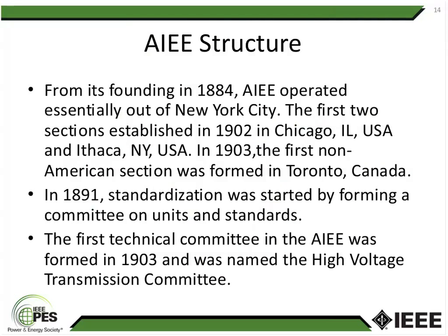The AIEE was founded in 1884 and operated essentially out of New York. The first two sections established were one in 1902 in Chicago, Illinois, and one in Ithaca, New York. In 1903, the first non-American section was formed in Toronto. Since everything was operated out of New York, the New York section was not formed until 1913. In 1891, standardization was started by forming a committee on units and standards. The first technical committee in the AIEE was formed in 1903 and was named the High Voltage Transmission Committee.